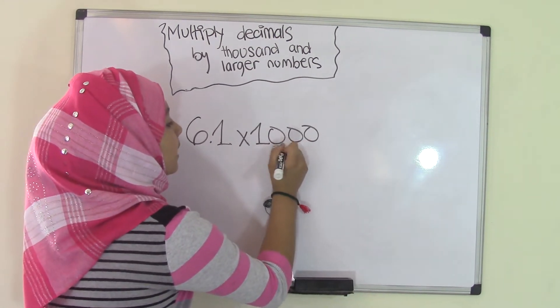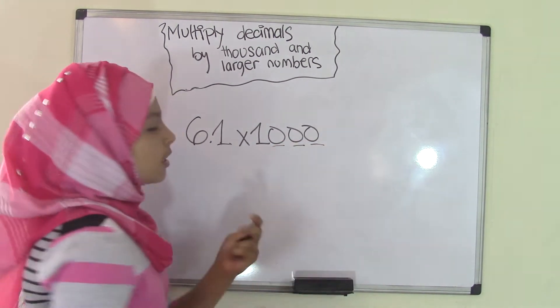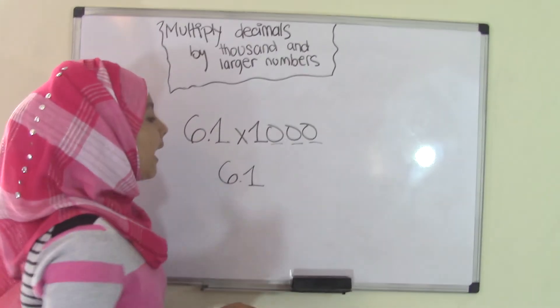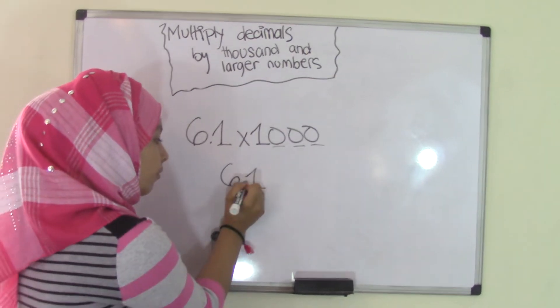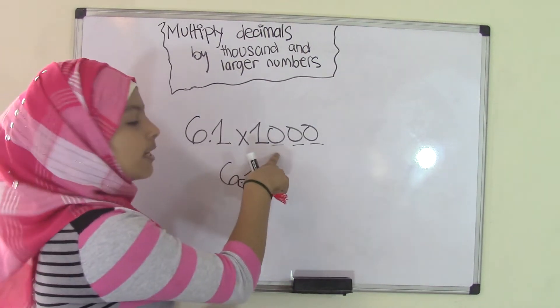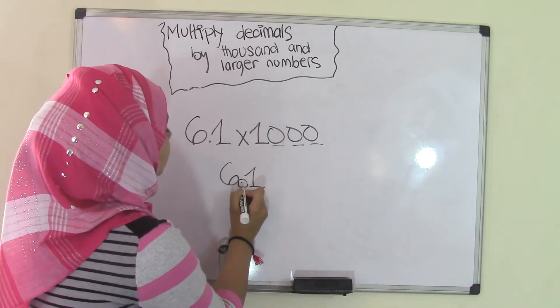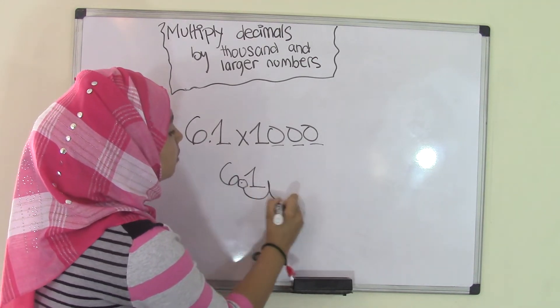So, 1,000 has three zeros, right? So, what we're going to do is take the decimal number, which is 6.1, and move this decimal point right here three times because 1,000 has three zeros. So, we're going to take this decimal point and move it one, two, three.